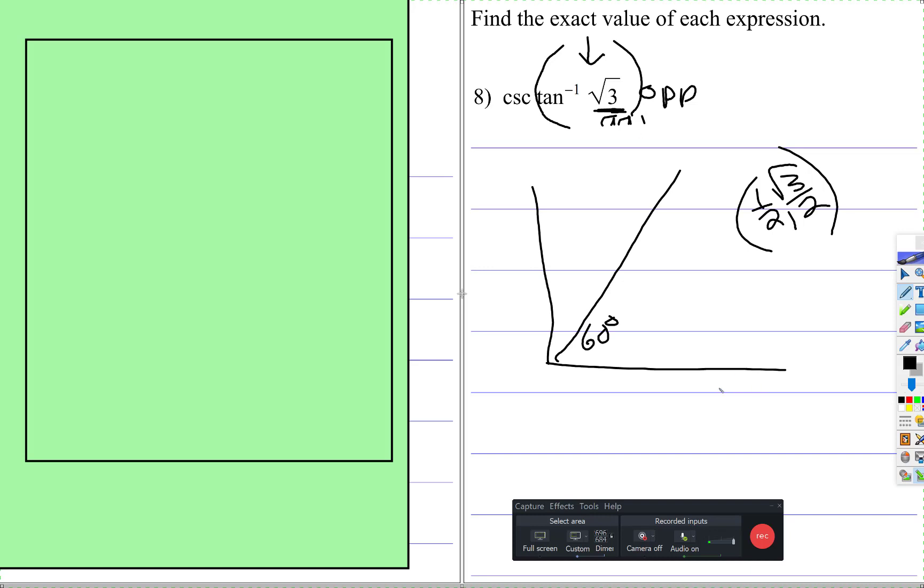So now we just have to say opposite over adjacent, so √3/2 over 1/2, we're going to multiply top and bottom. So we now know that this theta is π/3.